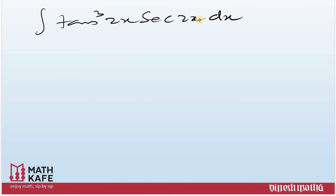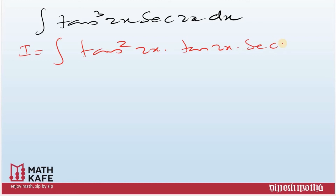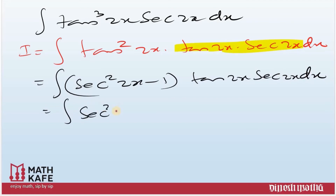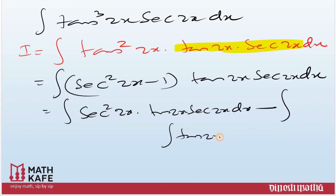Next question: ∫tan³(2x) · sec(2x) dx. Write tan³(2x) as tan²(2x) · tan(2x) · sec(2x) dx. We can't directly substitute tan²(2x) because the derivative of tan x is sec²x, which we don't have here. So write tan²(2x) as sec²(2x) - 1, giving (sec²(2x) - 1) · tan(2x) · sec(2x) dx. Separate into two integrals: ∫sec²(2x) · tan(2x) · sec(2x) dx minus ∫tan(2x) · sec(2x) dx.